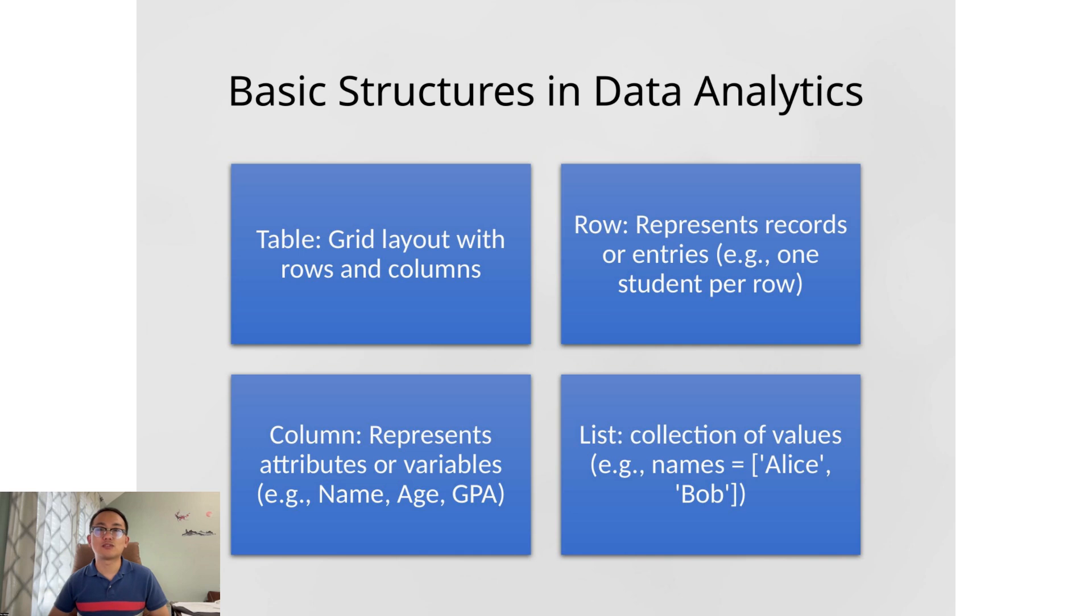In analytics, we work with a few key structures: rows, columns, tables, and lists. A table is like a spreadsheet, made up of rows and columns. Columns are fields or attributes, like age, date, or product name. Rows are records. Each one is an observation, like a single customer or a single transaction. A list is a bit different. It's a sequence of items stored together. Each item can be anything: a number, a string, or even another list or table. Think of it like a box holding different types of objects. Lists are powerful tools, especially in coding and data analysis.